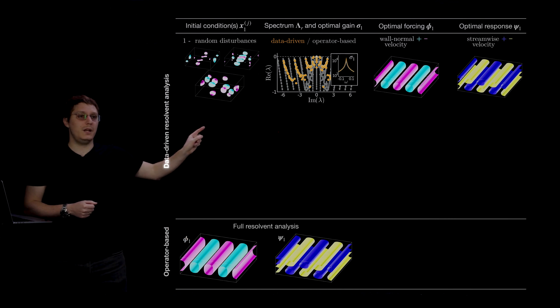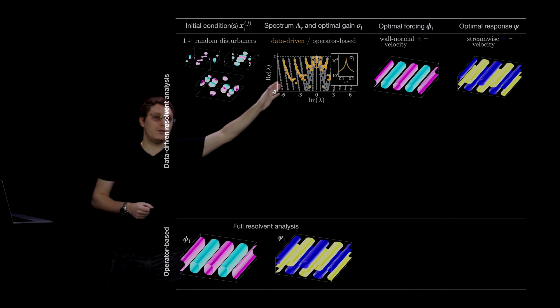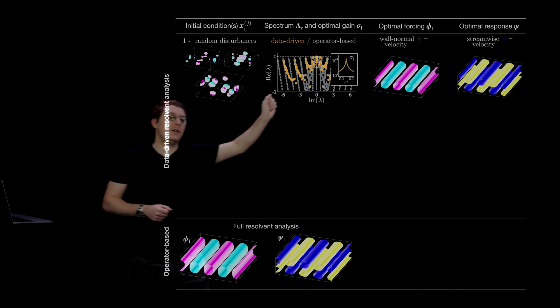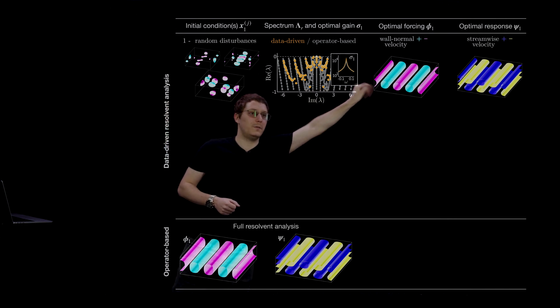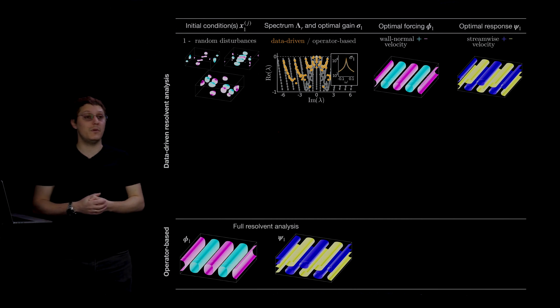And these are the ones obtained from data using a dataset that was generated starting from these initial conditions, where this middle plot shows the learned DMD spectrum overlaid on top of the true spectrum. And these are the data-driven resolvent modes. For this dataset, we needed to retain 200 DMD modes to get this approximation.